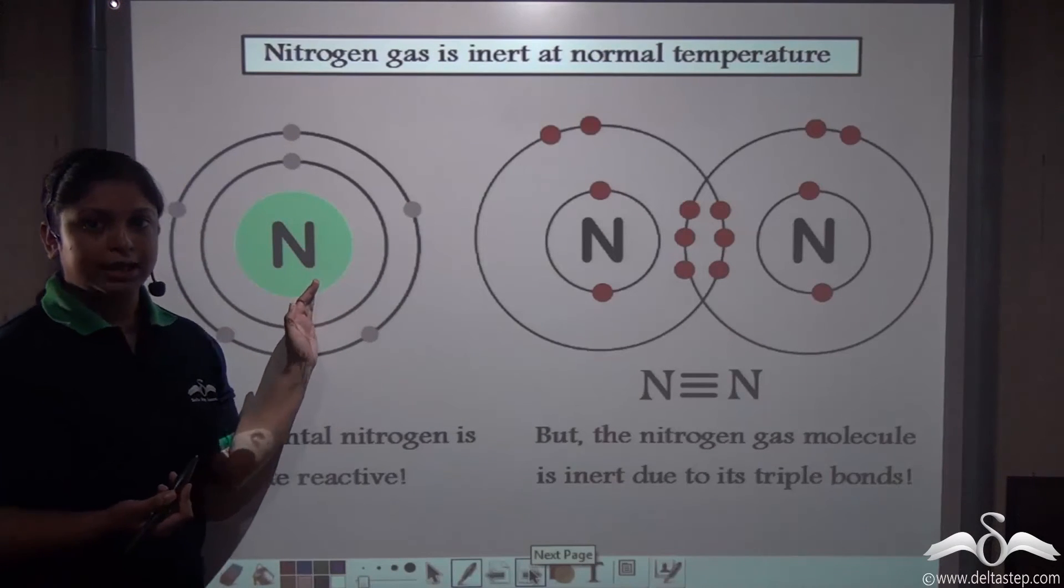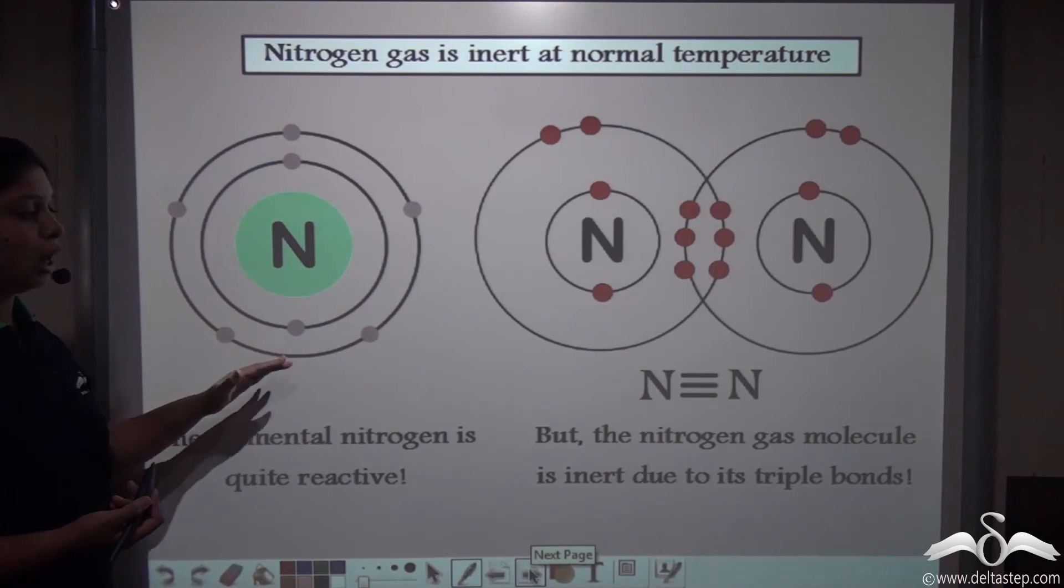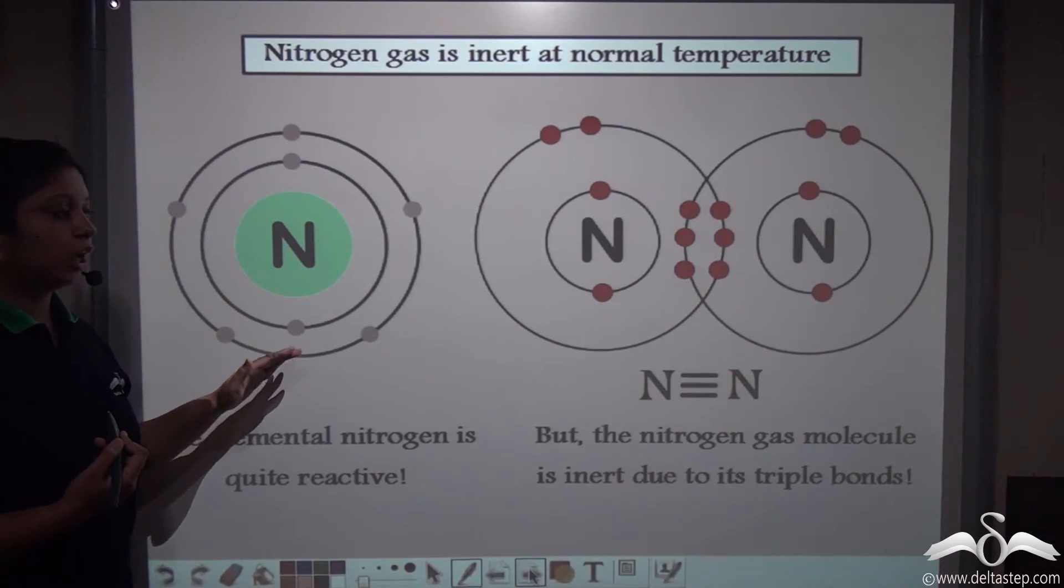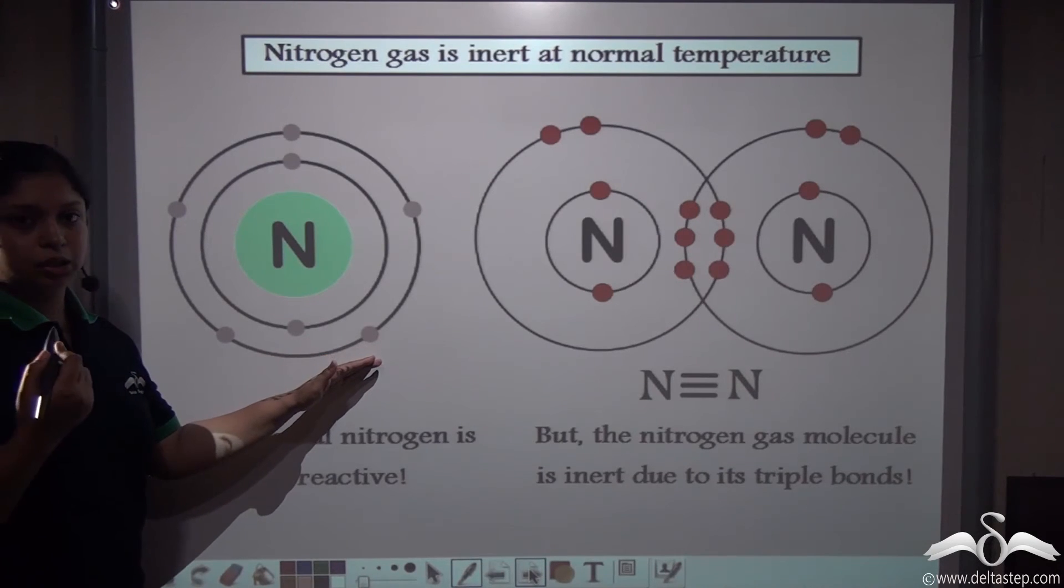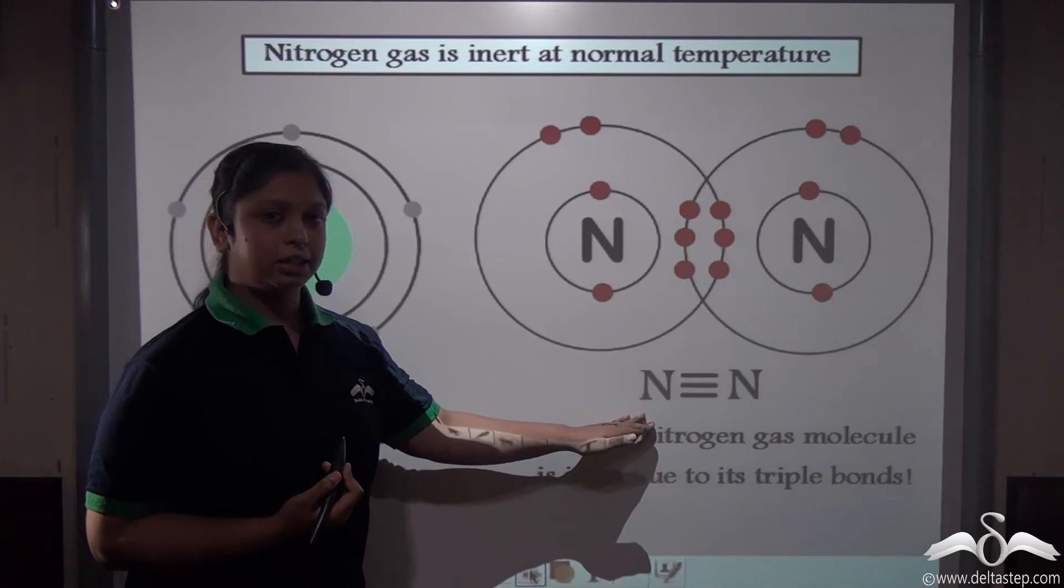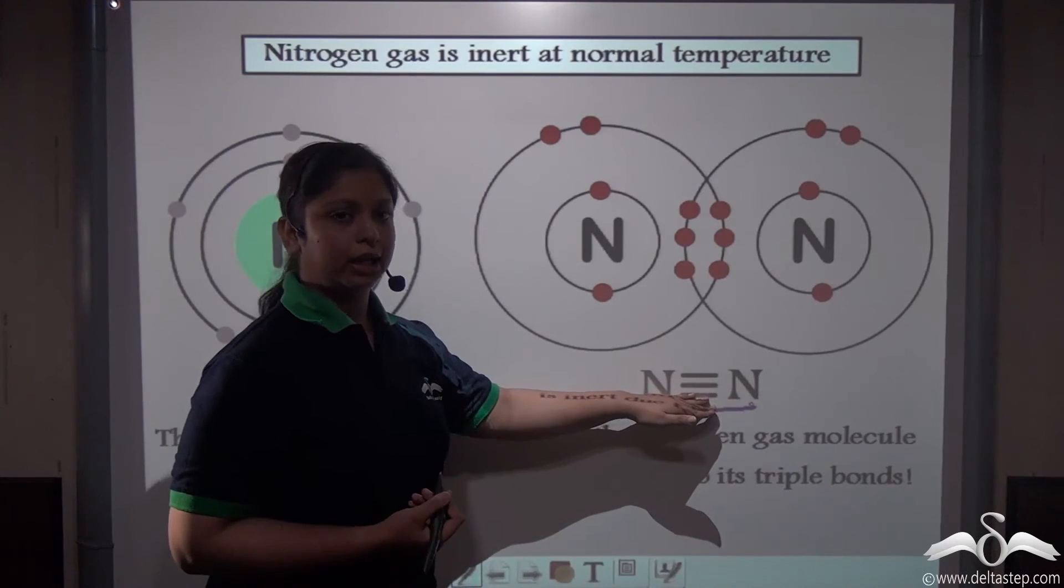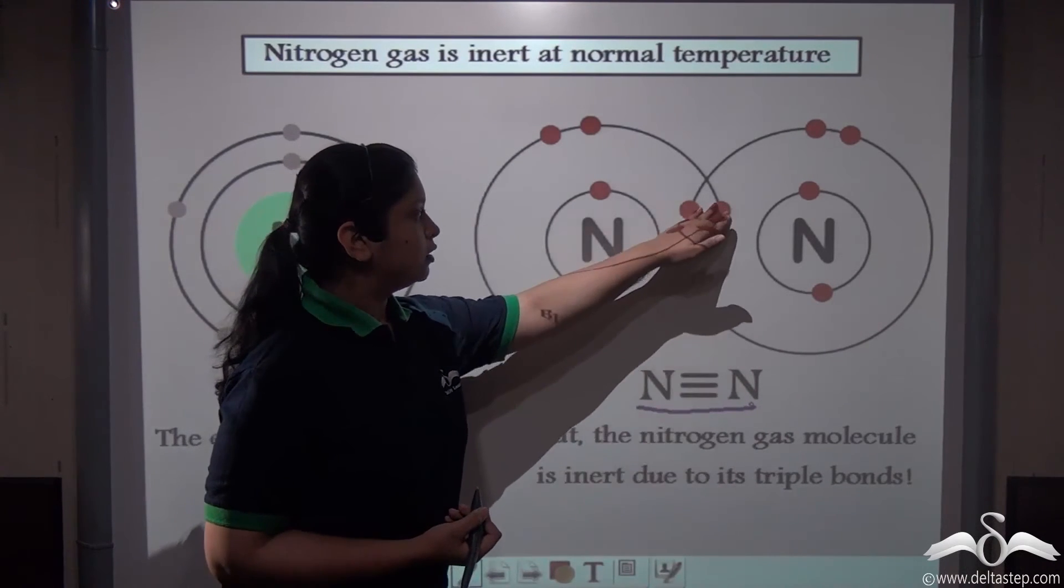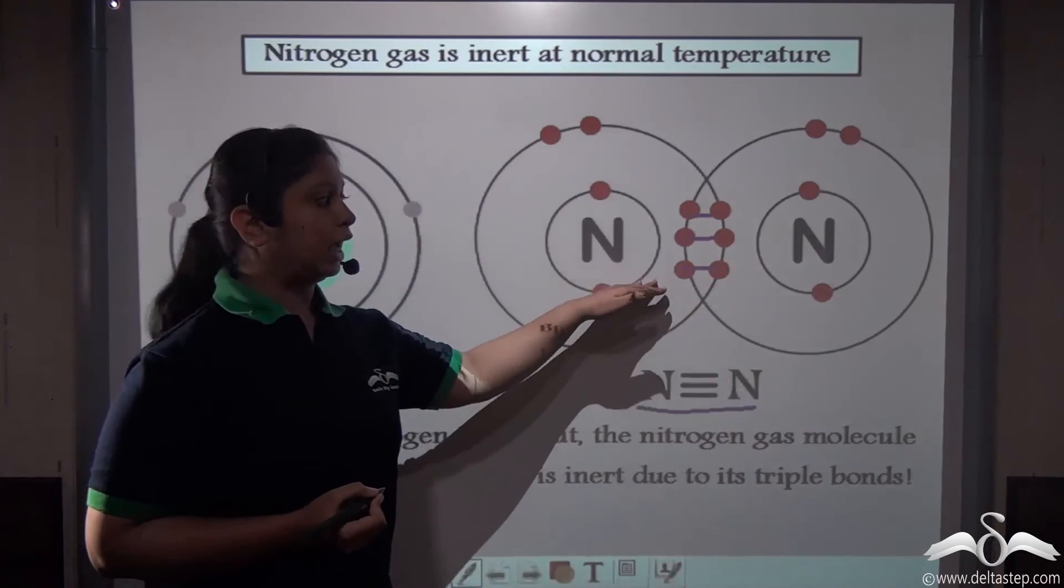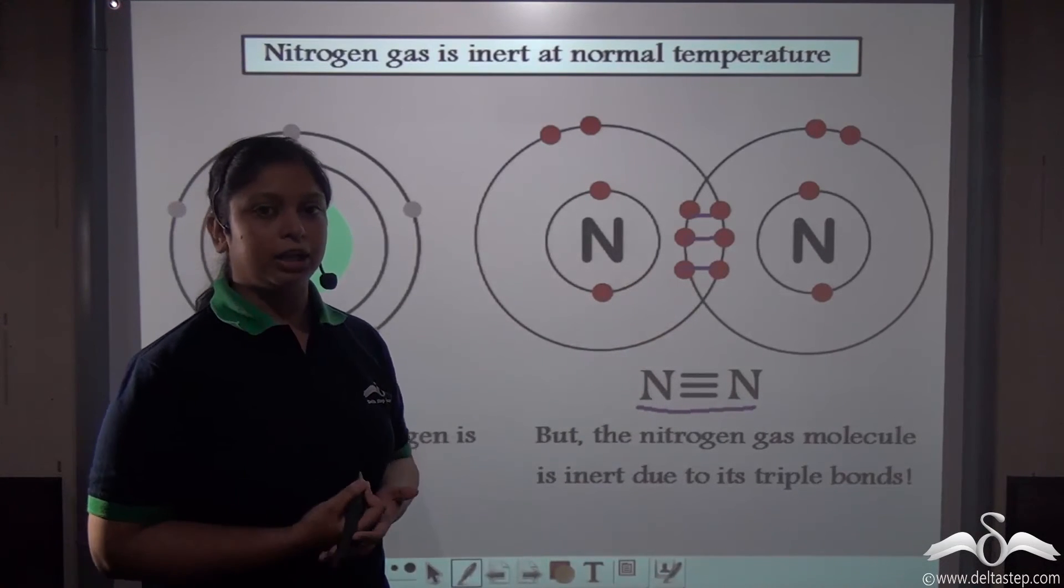So nitrogen as an element is quite reactive, since it contains five electrons in the outermost shell and it needs three more electrons to attain the nearest noble gas configuration. But nitrogen in the environment is present as nitrogen gas bonded by three covalent bonds, and they shared the electrons among them. This is why nitrogen gas is so inert and it can be used in packaging industries.